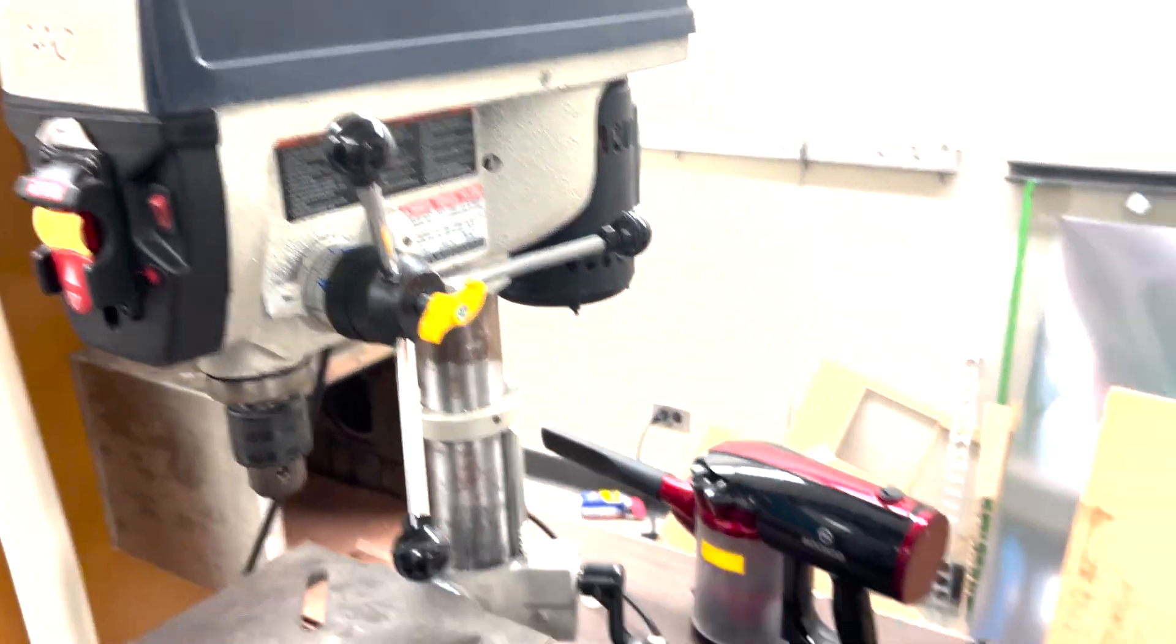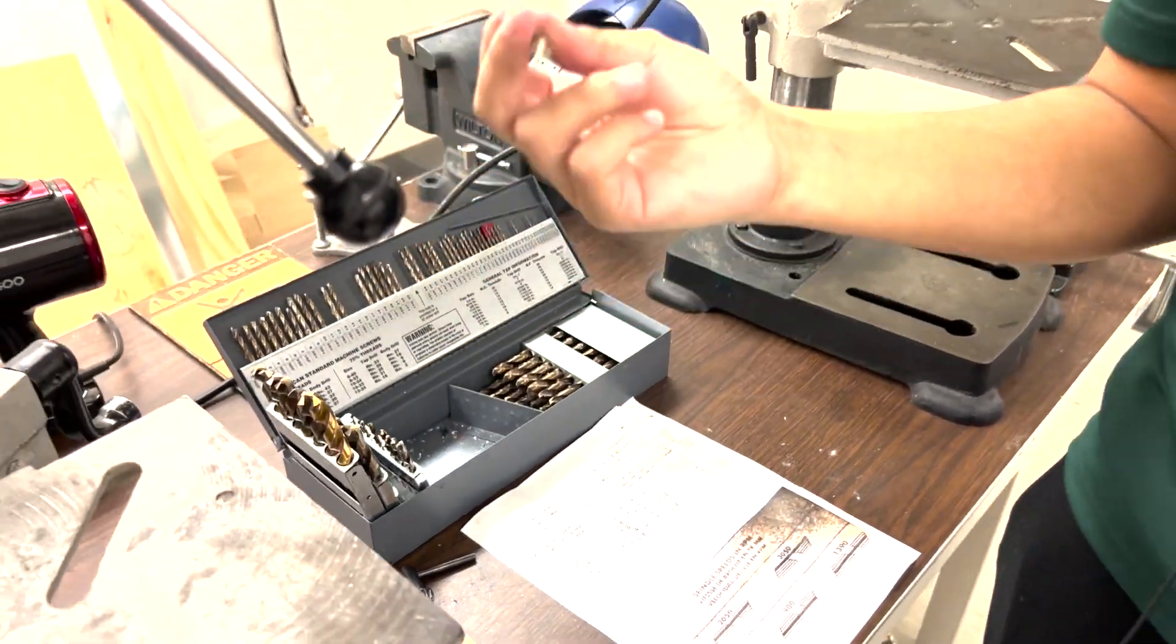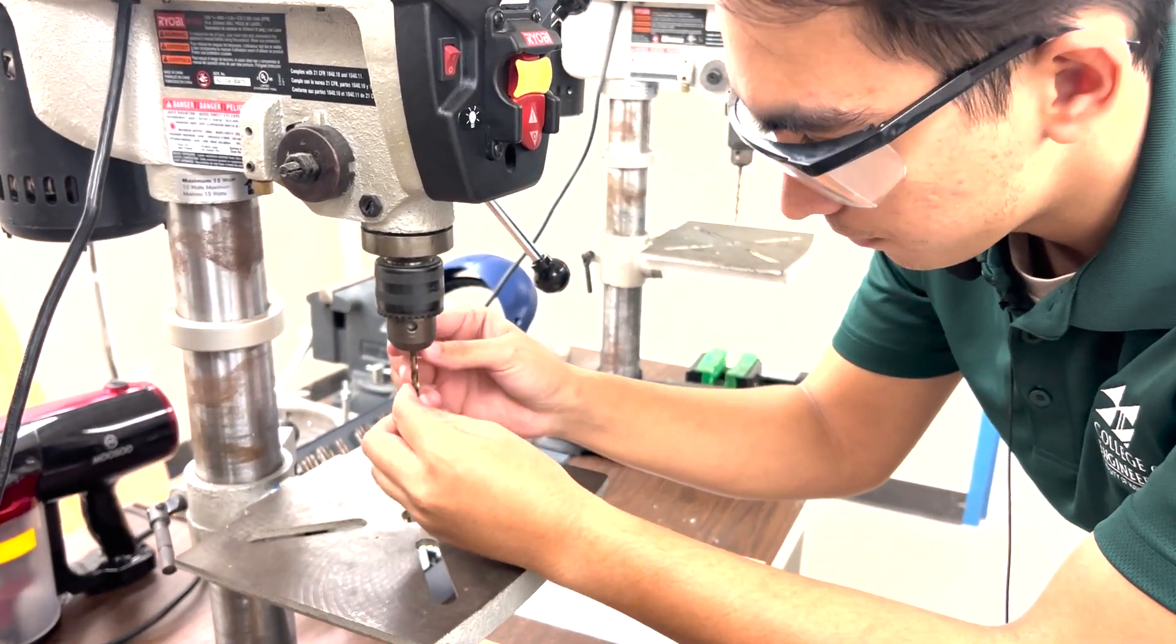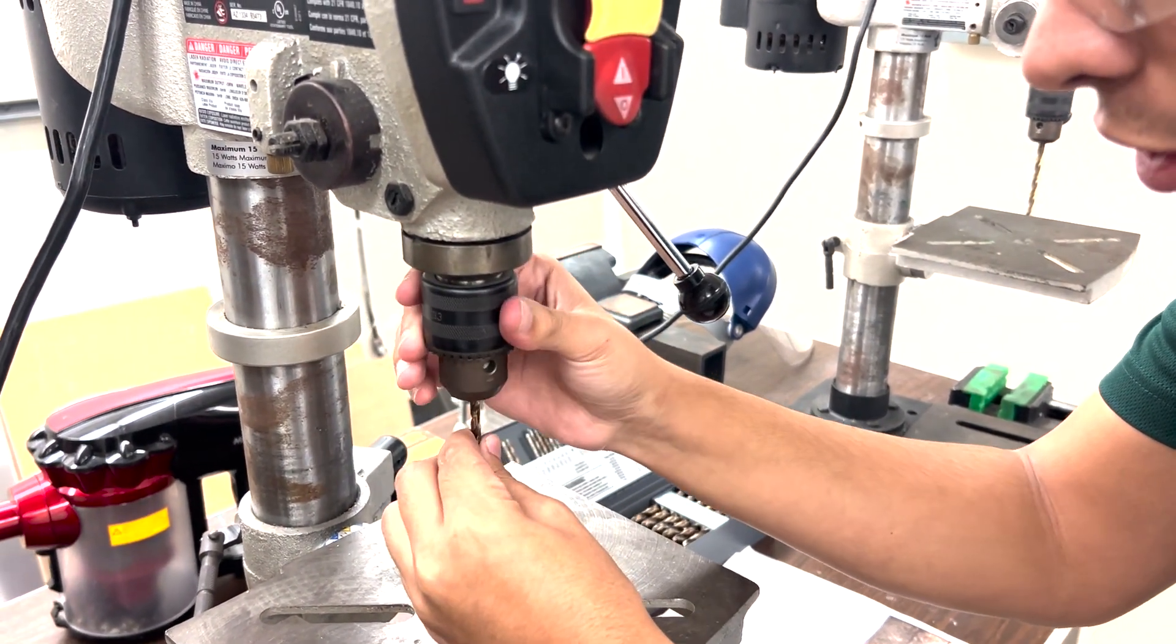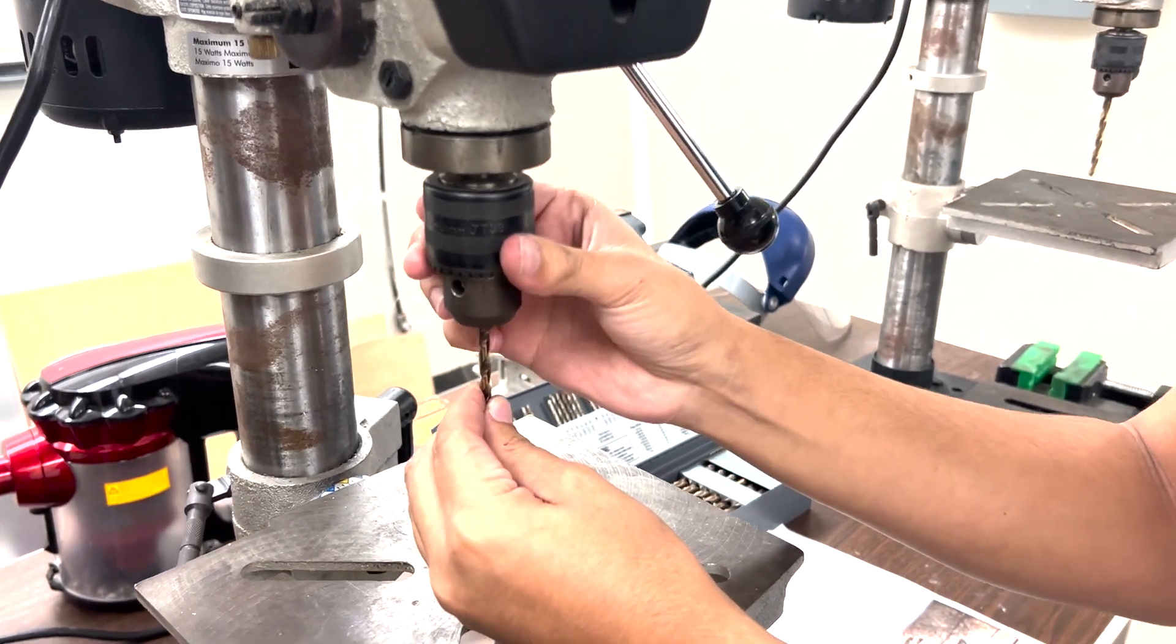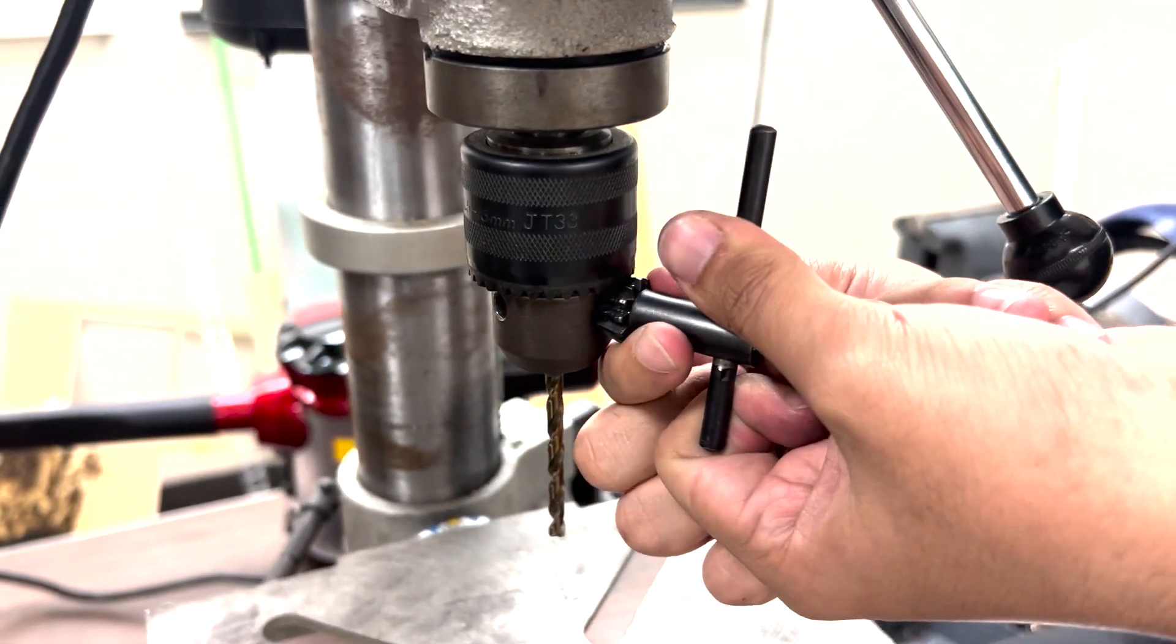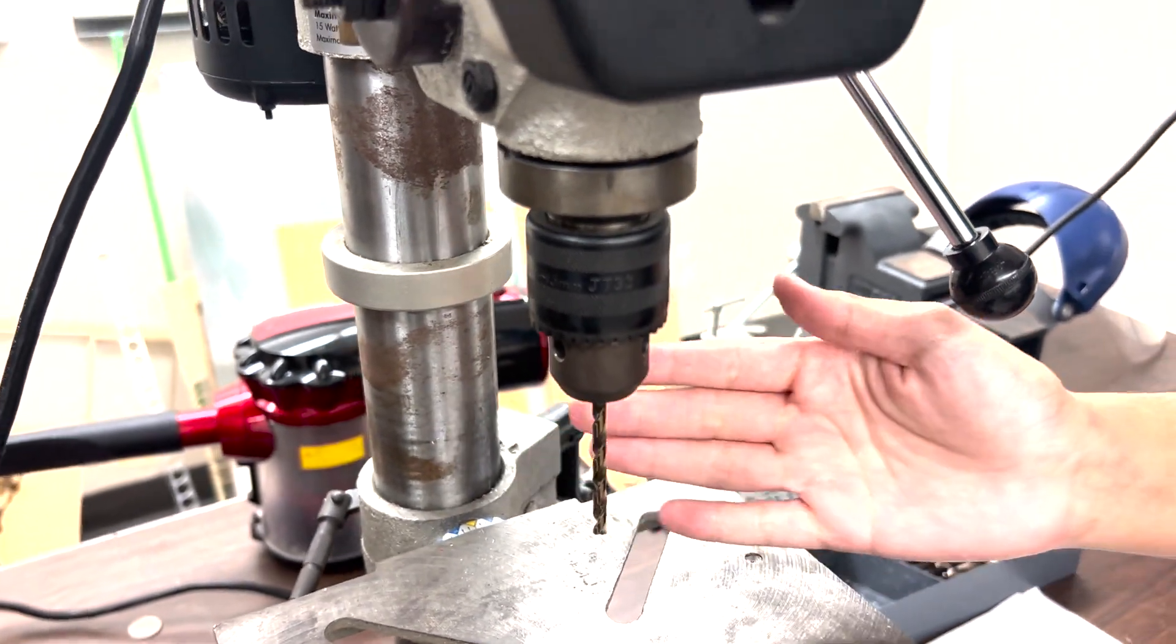From there, you want to set your bit into the chuck. You grab the bit, make sure your chuck is all the way open, stick this vertically in, and then tighten the chuck by turning counterclockwise. Once you hit a point where you can't tighten anymore with your hand, take the chuck key and tighten the chuck till your bit is securely locked. You can give it a little pull to make sure it's all the way secured.